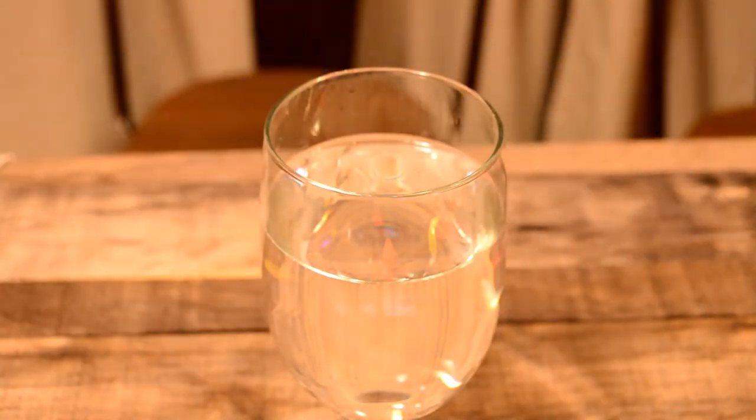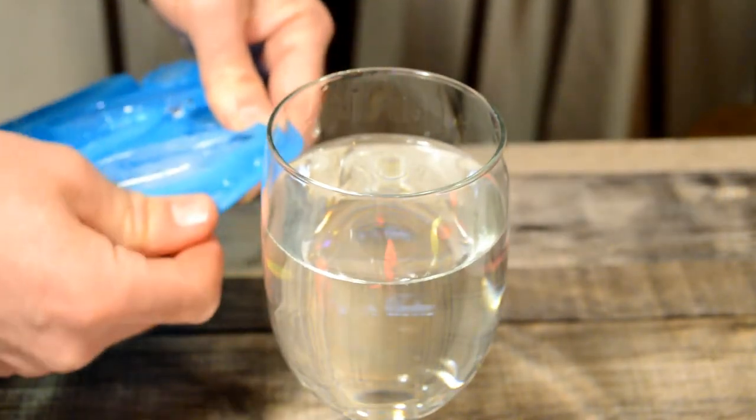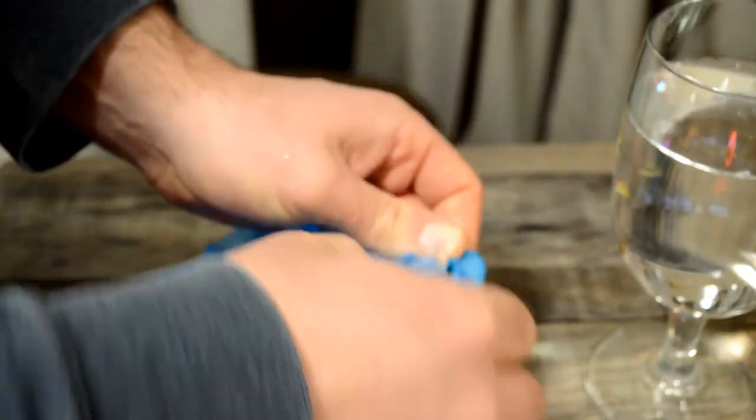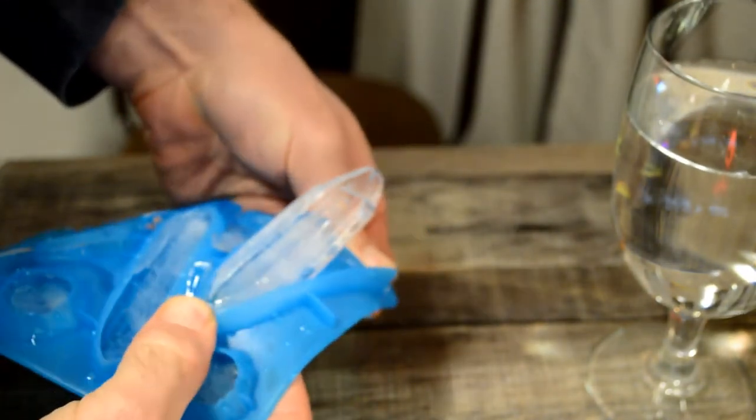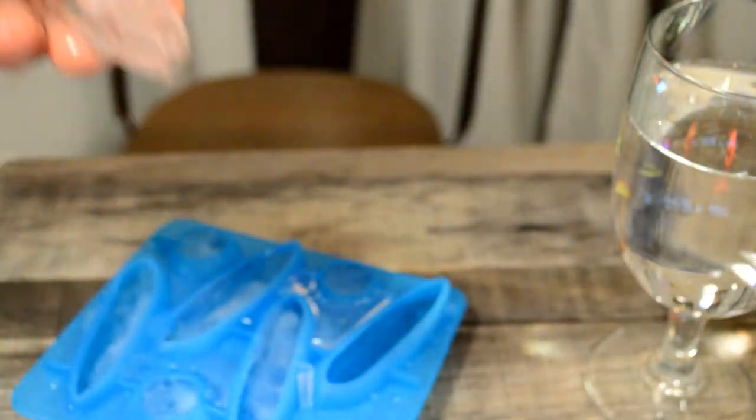All right. So I took the little ice mold out of the freezer. I'm going to run it under some kind of just warmish water. Get it loosened up just a bit. All right. Should be ready to go. All right. So here we go. First, we have the ships or the ship.